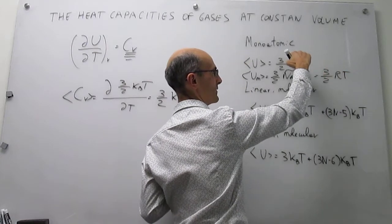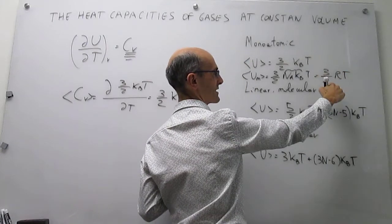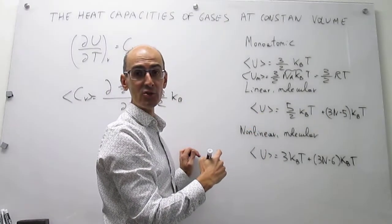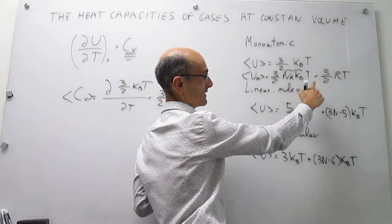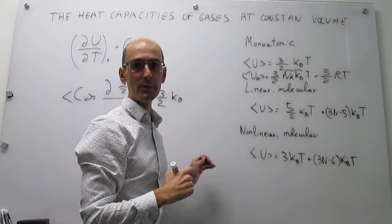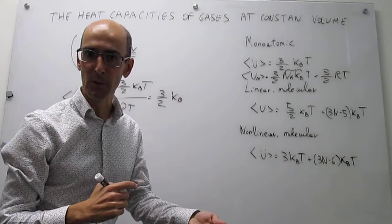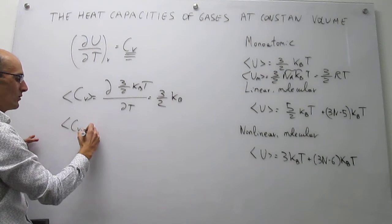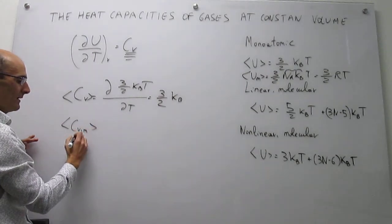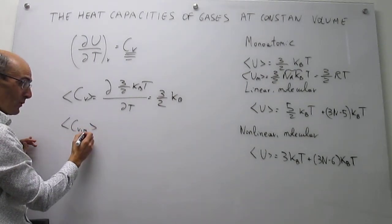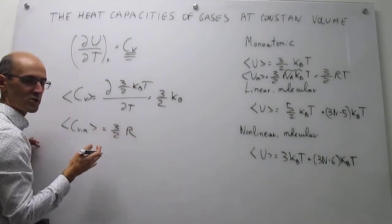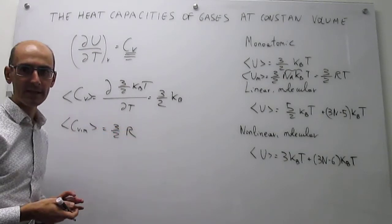The only difference between the per-particle and per-mole expressions is that the per-particle version has units of joules, while the per-mole version has units of joules per mole. So you can now define the heat capacity at constant volume per mole, and that will simply be (3/2)R for a monatomic ideal gas.